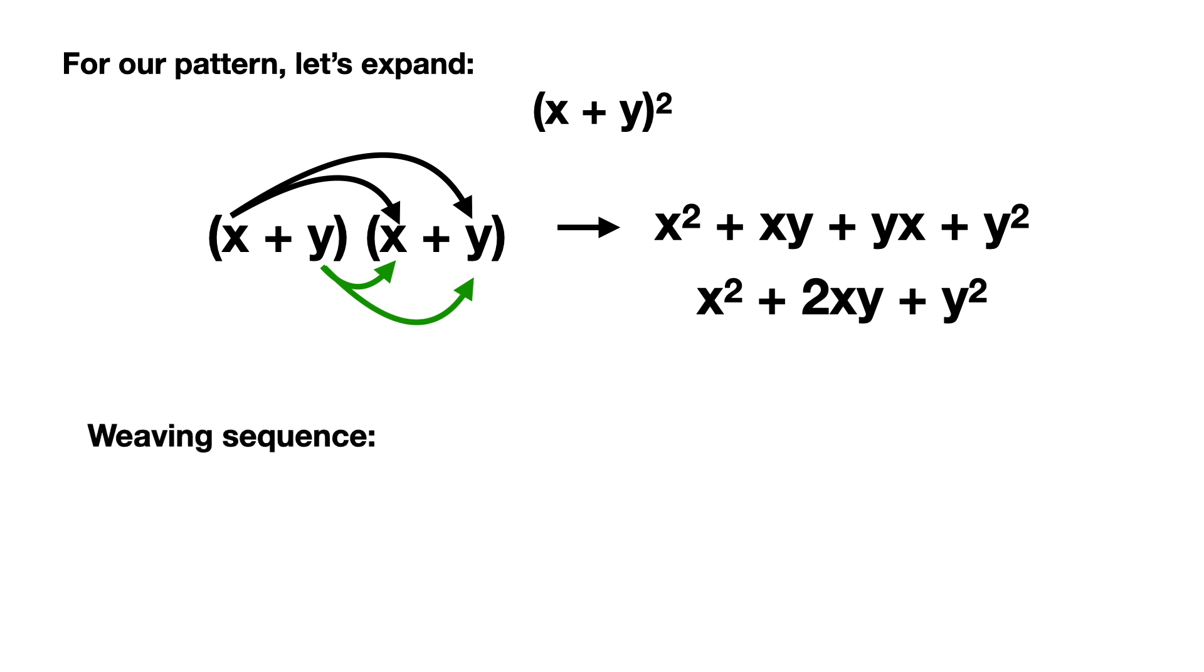Now using Ada Dietz's hand weaving technique we have to simplify this a little bit further and just split those terms out and we get our final sequence of xx, xy, xy, yy. Now before we start, the two variables x and y will need to be represented by at least two different colored strips or threads that we'll be weaving.